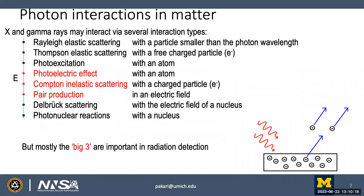A summary of photon interactions in matter: these are all quantum mechanical scattering events of a photon interacting with an electron or nucleus. They are split historically based on which energies they dominate. The big three important for radiation detection — learned yesterday — are the photoelectric effect, Compton inelastic scattering, and pair production.